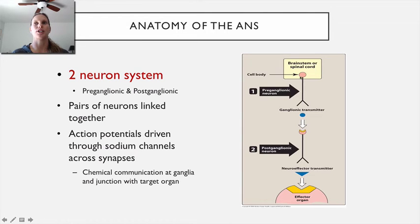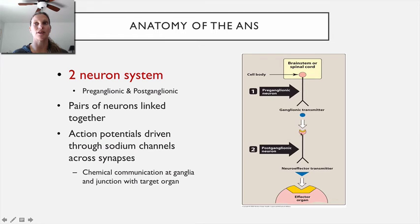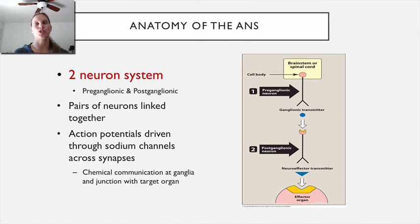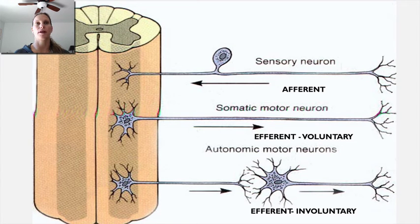We need to know about this setup and also the names of the transmitters involved. An electrical signal is generated at the central nervous system and propagated down the preganglionic neuron. That electrical signal then gets converted into a chemical signal to bridge the gap at the ganglia. This potentially depolarizes the postganglionic neuron, generating an electrical signal that travels all the way down, where it's again converted into a chemical signal to ultimately stimulate the effector. There are two kinds of communication: electrical and chemical.